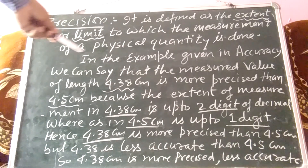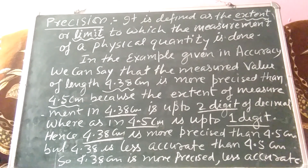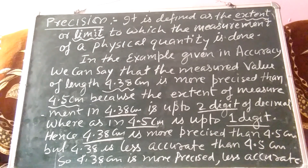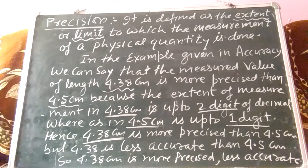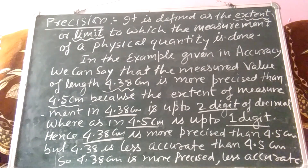Therefore, from the example given in accuracy, we can say that the measured value 4.38 centimeter is more precise than 4.5 centimeter, because the extent of measurement in 4.38 centimeter is up to 2 digits after the decimal, whereas in 4.5 centimeter it is only up to one digit. Hence 4.38 is more precise than 4.5.